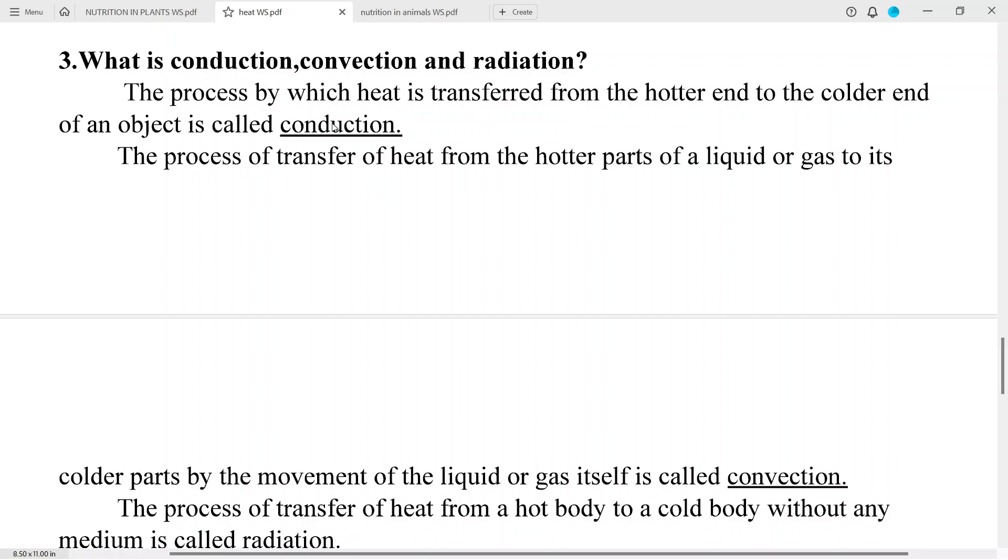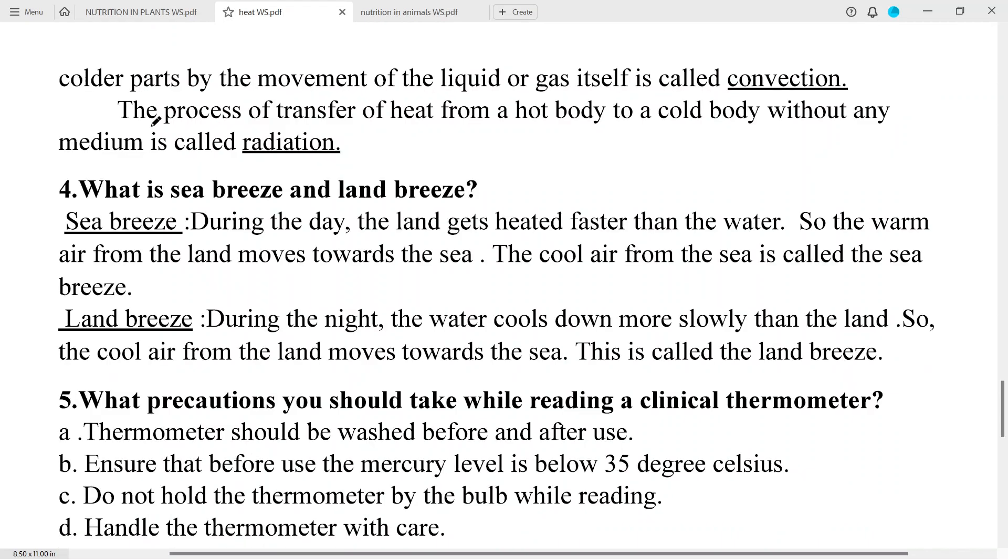Question number 3: What is conduction, convection and radiation? The process by which heat is transferred from the hotter end to the colder end of an object is called conduction. The process of transfer of heat from the hotter parts of the liquid or gas to its colder parts by the movement of the liquid or gas itself is called convection. The process of transfer of heat from a hot body to a cold body without any medium is called radiation. Question number 4: What is sea breeze and land breeze?